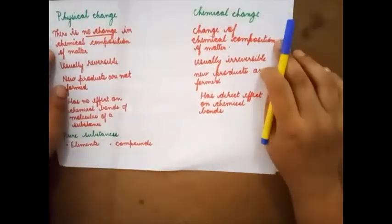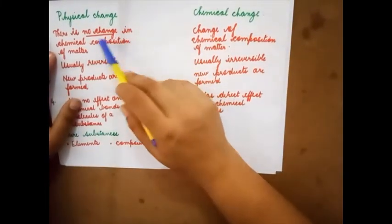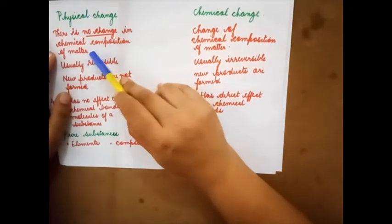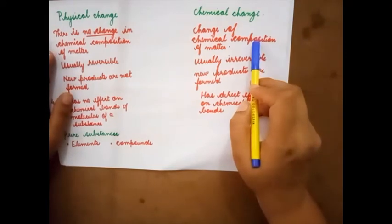Next physical and chemical change. Physical change: there is no change in chemical composition of matter. Chemical change: there is change in the chemical composition of matter.